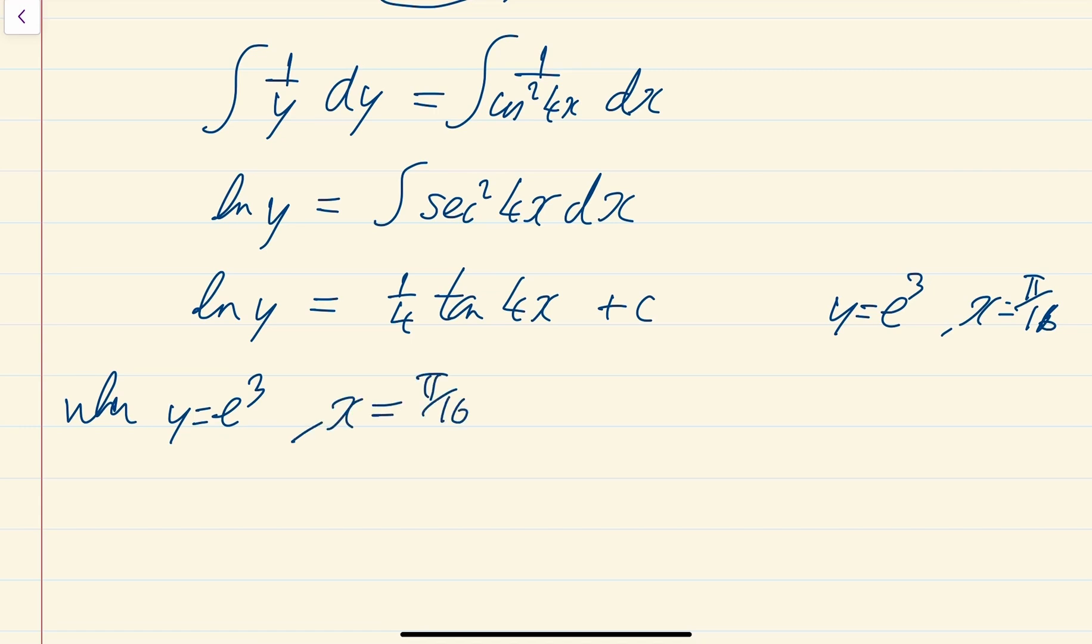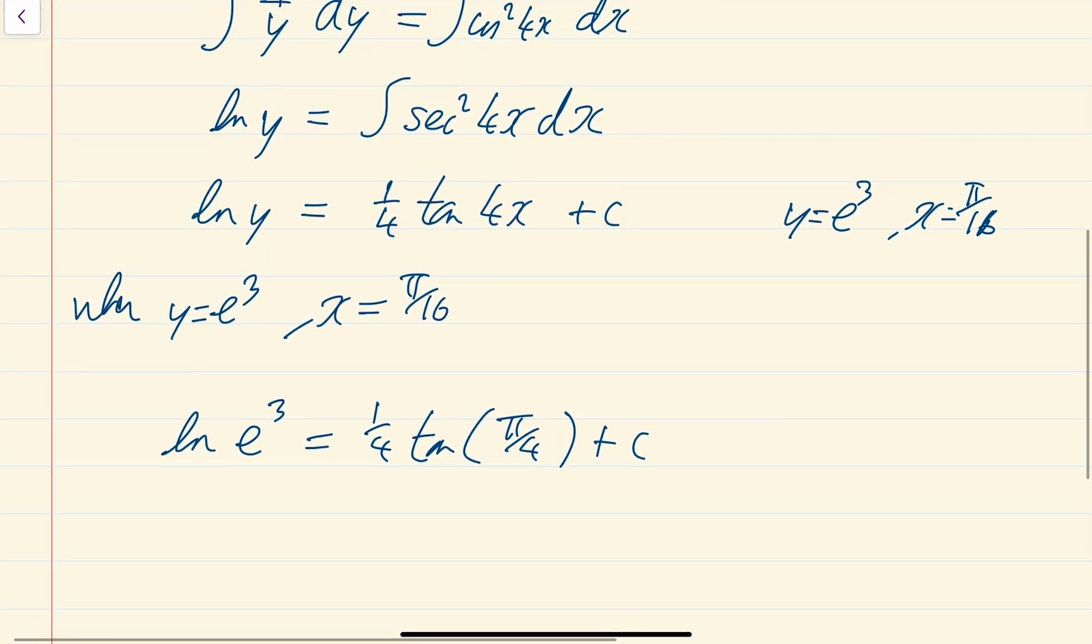So let's just put that in and see what you've got. So we've got ln of e to the power of 3 equals 1/4 times tan of 4 times pi over 16 is just going to be pi over 4. OK, now I've never learned these in terms of radians and so on. Like pi over 4, but it's the same as 45 degrees. And tan of 45 degrees, we should know that tan of 45 degrees is 1. If you don't know this, put your calculator in radians mode, do tan of pi over 4, and you'll get 1.